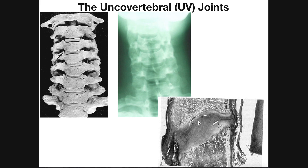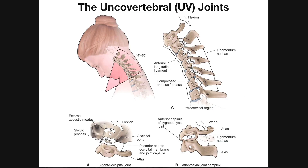When we go into flexion, we get something called upsloping. As this person flexes the neck, the vertebra above actually slides anteriorly relative to the vertebra below. So when we consider C2 during flexion, it will actually slide a little bit anteriorly relative to C3. Similarly, C3 will slide a little bit anteriorly relative to C4.